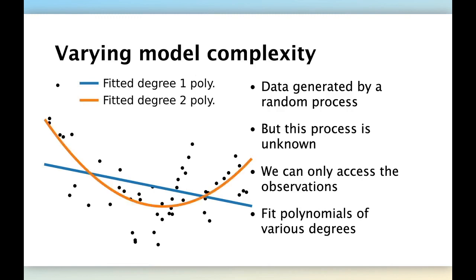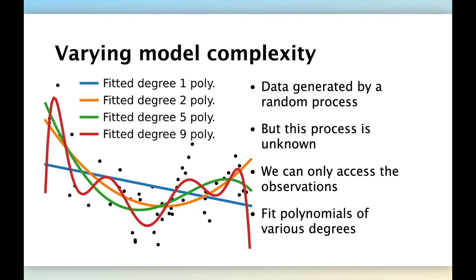Then we can add more degrees of freedom. For instance, a degree two polynomial is a quadratic function. This one has more flexibility and can capture some of the global structure of the training set. We can increase the degree of the polynomial even further. And we see that now we can find interesting change in the slope on the right hand side. And if we increase further to degree nine polynomial, something very interesting happens.